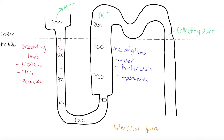The filtrate moves down the descending limb and then up the ascending limb towards the distal convoluted tubule. The first thing that happens is sodium ions are transported out of the ascending limb by active transport — moving against their concentration gradient from the ascending limb into the interstitial space. Remember, in the ascending limb water can't leave, but ions can.